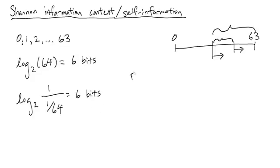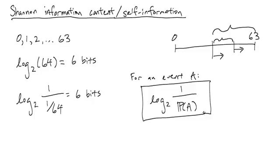In general, for an event A, the Shannon information content is defined as log base 2 of 1 divided by the probability of event A. This is Shannon information content.